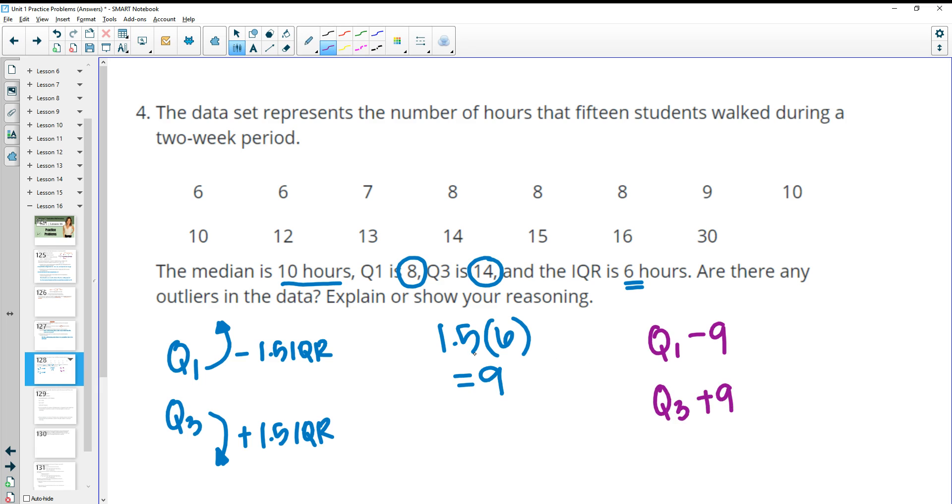So in this case, Q1 is 8. So 8 minus 9 is negative 1. We don't have any values that are negative 1, and you couldn't walk for negative 1 hour. So there's no lower outliers. Q3 is 14. So when we do 14 plus 9, we get 23. So anything above 23 is going to be considered an outlier. So 30 would be an outlier.